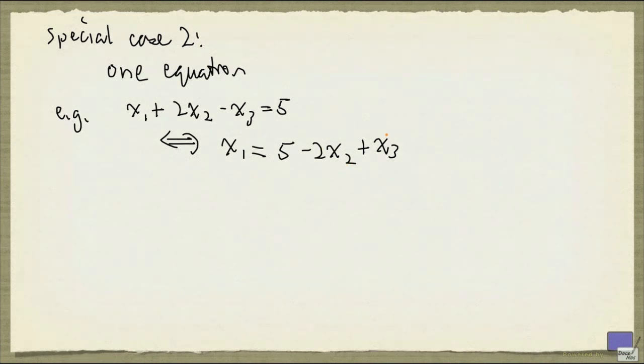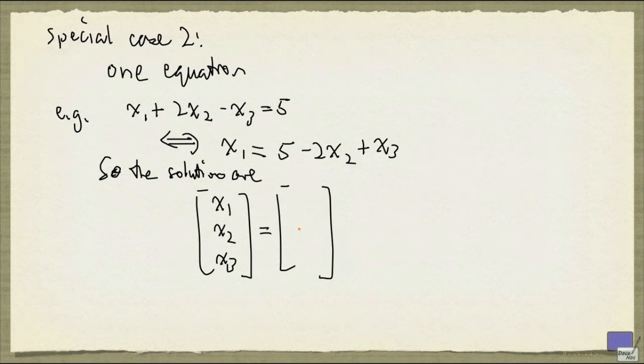So if we allow x2 and x3 to be any rational number, then x1 will be 5 minus 2 times whatever value x2 is, plus whatever value x3 is. So we can specify the solution as a triple, and x2 say some rational number s, and x3 some rational number t, then x1 will have to be 5 minus 2s plus t.